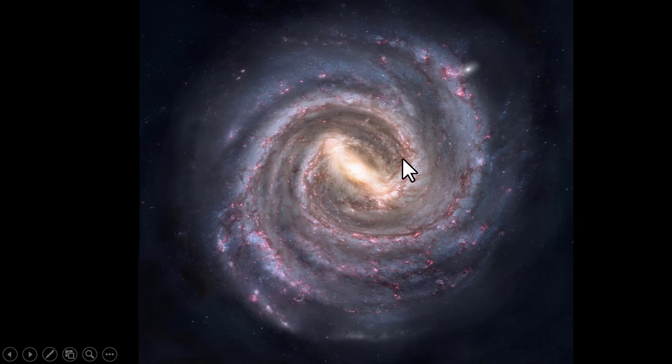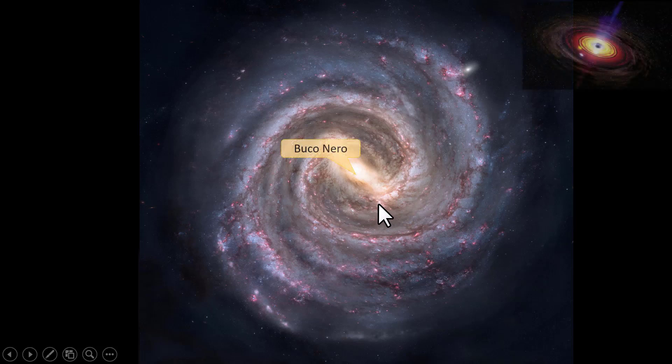Let's start with the main element which is the core. Inside the core there is a supermassive black hole — a black hole with a mass equivalent to millions of times that of stellar black holes. We're going to look at black holes in the fourth lesson of my course, and I'm going to talk extensively about supermassive black holes and their differences with normal stellar black holes.